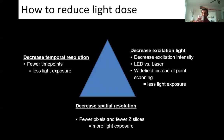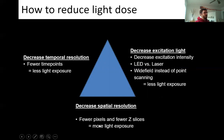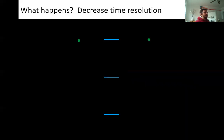There are three major ways to reduce light dose: decrease temporal resolution (take fewer time points), decrease excitation light by turning down laser or LED power or switching to widefield instead of point scanning, and decrease spatial resolution by scanning fewer pixels or fewer z-slices. Each of these comes with trade-offs.